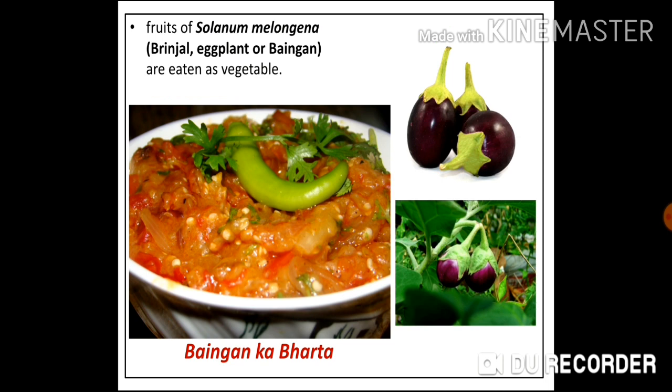The next food plant is Solanum melongena, commonly called brinjal, eggplant, or baingan. Fruits of brinjal are eaten as vegetables. On the right you can see the plant with its fruit, and on the left the famous dish baingan ka bharata, which originated from the Punjab region of North India.